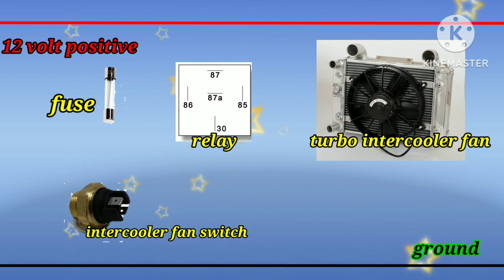Now we will connect all the wires. We will start on Turbo Intercooler Fan. Intercooler Fan has 2 wires, 1 for Ground and 1 for Number 87 of Relay.